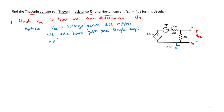Notice there's a bunch of voltage sources here so that looks a little bit tricky. But notice that we also have just one single loop. If we have just one single loop, that is a good opportunity to use Kirchhoff's voltage law. If we take advantage of that one loop, we won't have to solve as many equations as with mesh analysis or node analysis — because there are quite a few nodes in this circuit with only one loop.